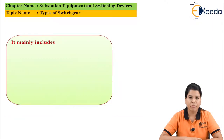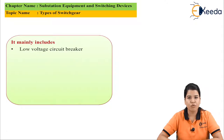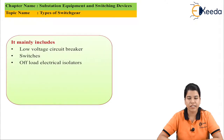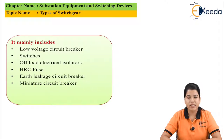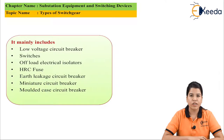Low voltage switchgear mainly includes the following parts: first, low voltage circuit breaker; second, switches; third, on-off electrical isolators; fourth, HRC fuse; then earth leakage circuit breaker (ELCB), miniature circuit breaker (MCB), and molded case circuit breaker.